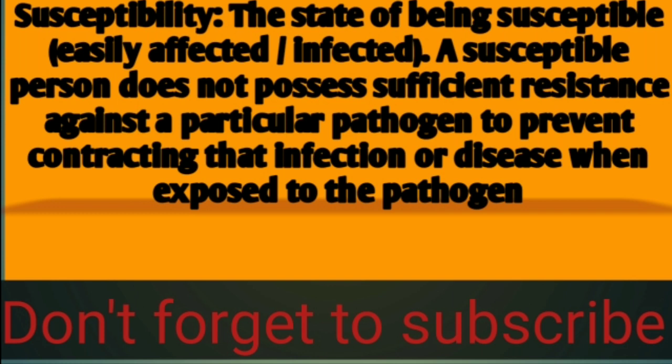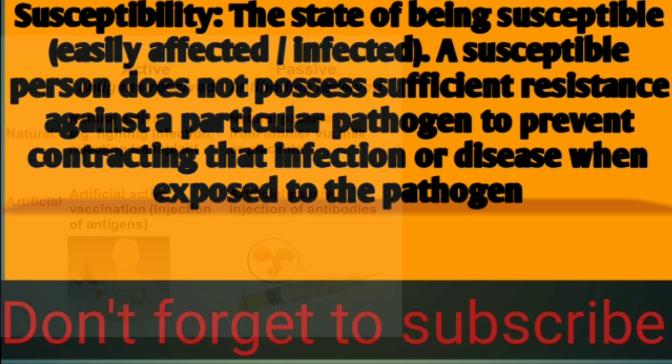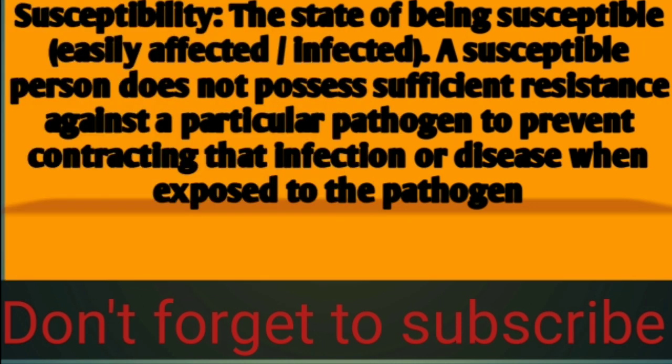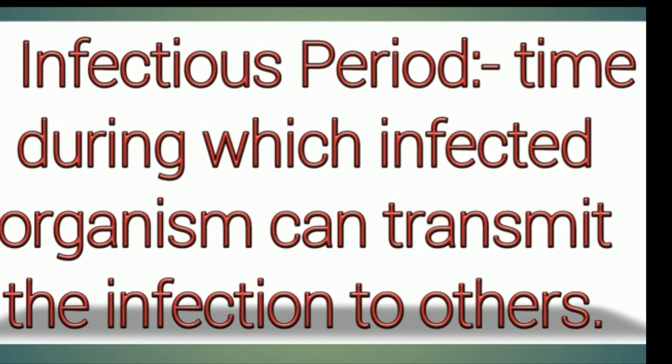Next is susceptibility. Any person or organism that has no resistance, no immunity, and cannot fight against a disease is called susceptible. We can also say they are prone to the disease.